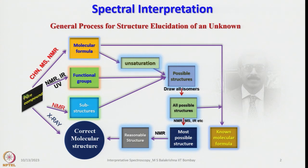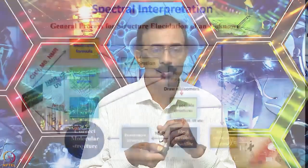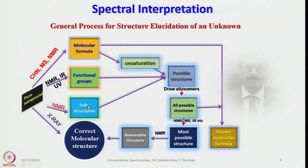When we have a pure compound we have several options: CHN analysis, elemental analysis, mass spectrometry, and NMR, which give some idea about molecular formula. Once we know the molecular ion peak from mass, using rule 13 and the hydrogen deficiency index, we should be able to identify a tentative formula and then identify functional groups using these methods.